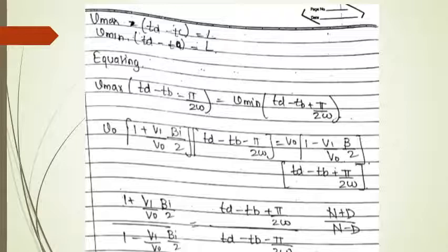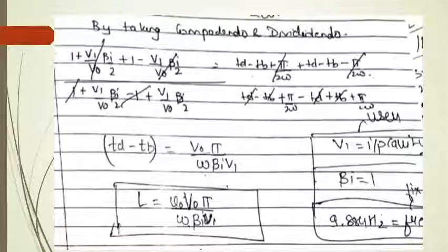To find the distance L we equate the expressions: v_min multiplied by (t_d minus t_a) equals v_max multiplied by (t_d minus t_c). We rearrange so all voltages are on one side and time on the other. Then we apply the componendo and dividendo rule — numerator plus denominator upon numerator minus denominator — to solve the equation.